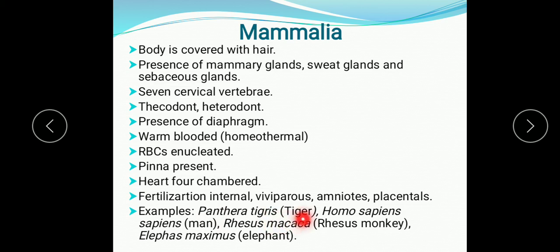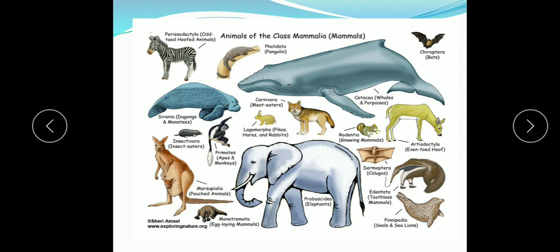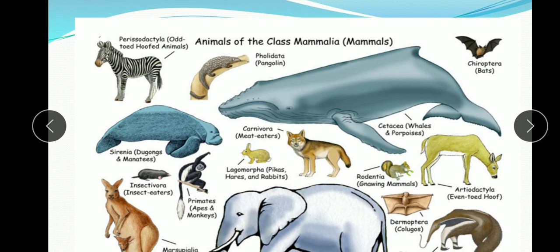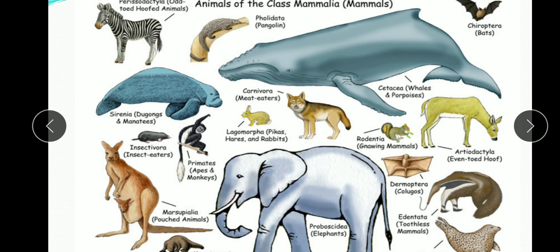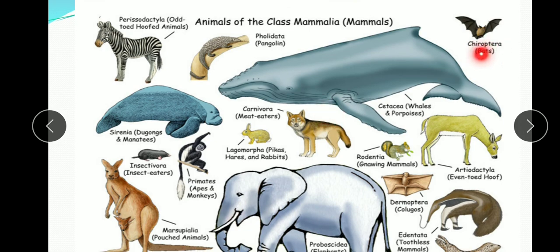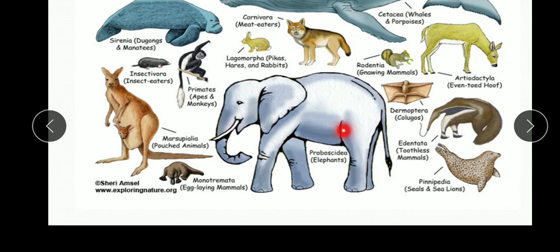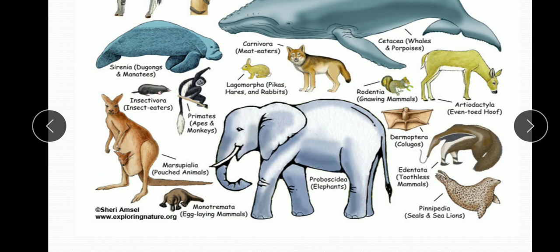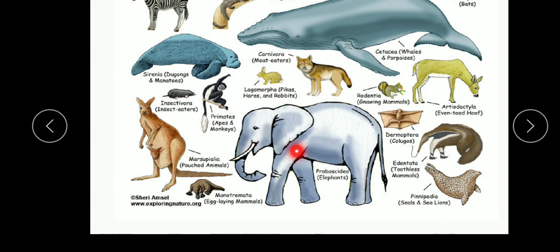Examples of Mammalia: Panthera tigris (tiger), Homo sapiens (man), Macaca mulatta (rhesus monkey), Elephas maximus (elephant). You can see here the zebra. Some mammals survive in water — the blue whale. And flying mammals — Chiroptera (bats). Also elephant, kangaroo, rabbit, squirrel, deer — all belong to class Mammalia.